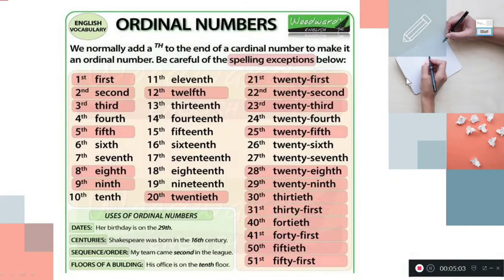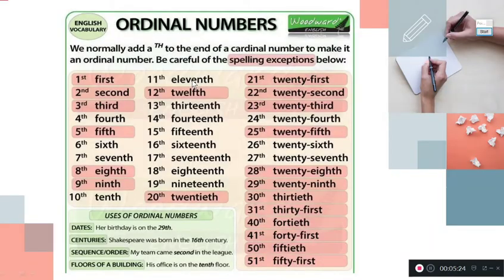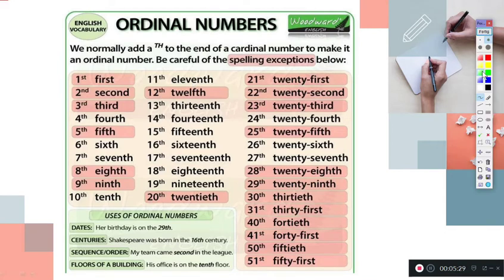Now we have the ordinal numbers. Remember that cardinal numbers are converted into ordinal numbers when we add a suffix, for example 'th.' In most cases we add 'th' to the number.